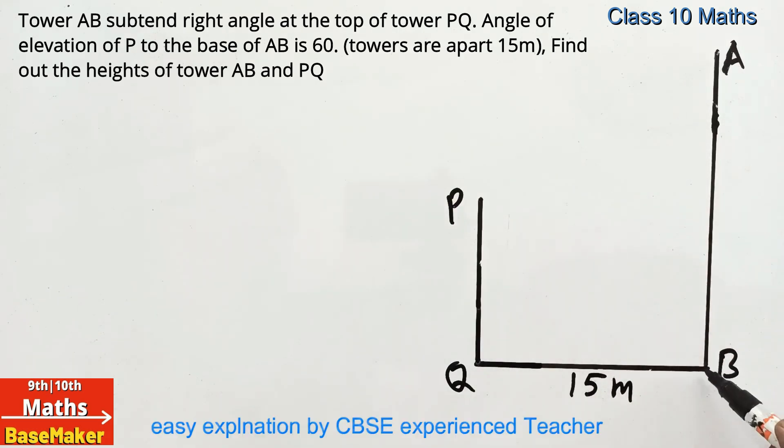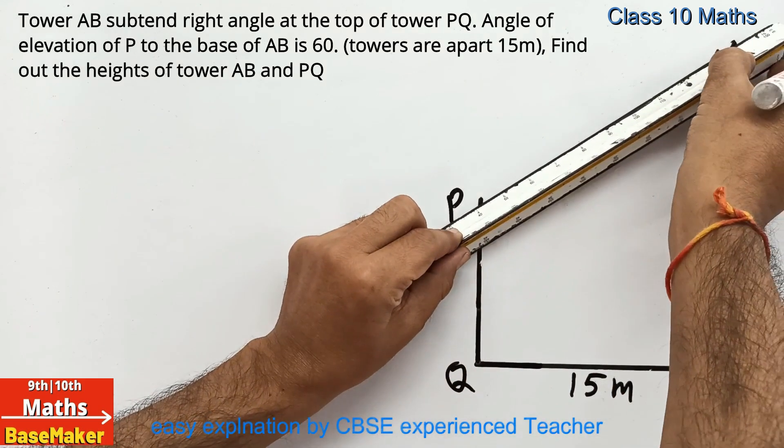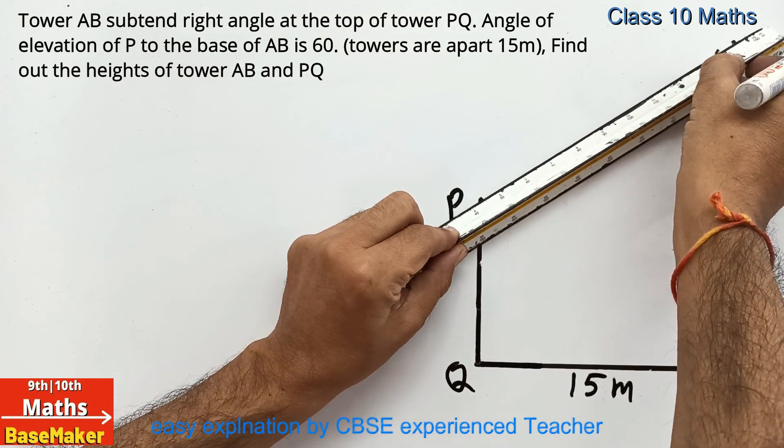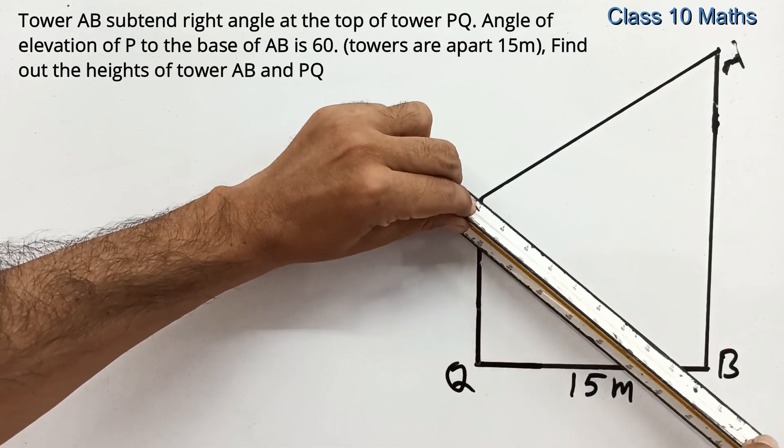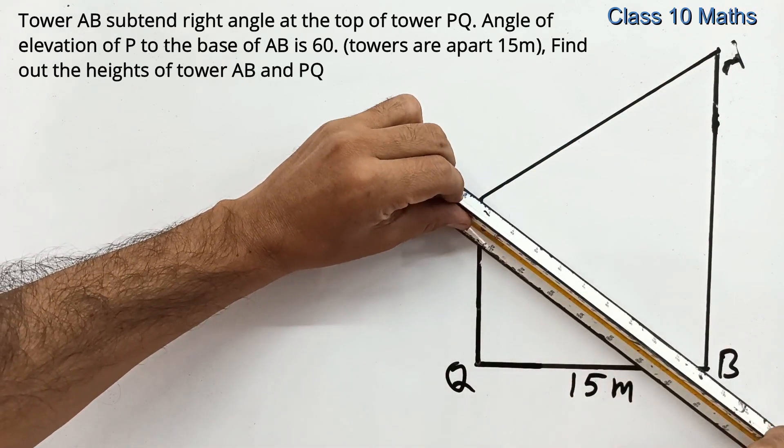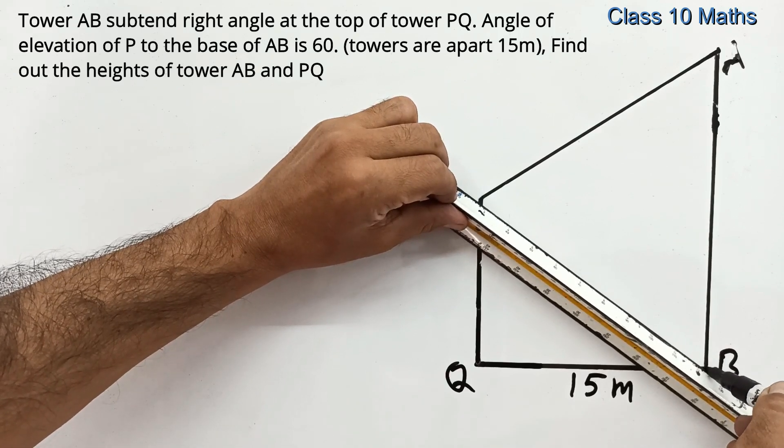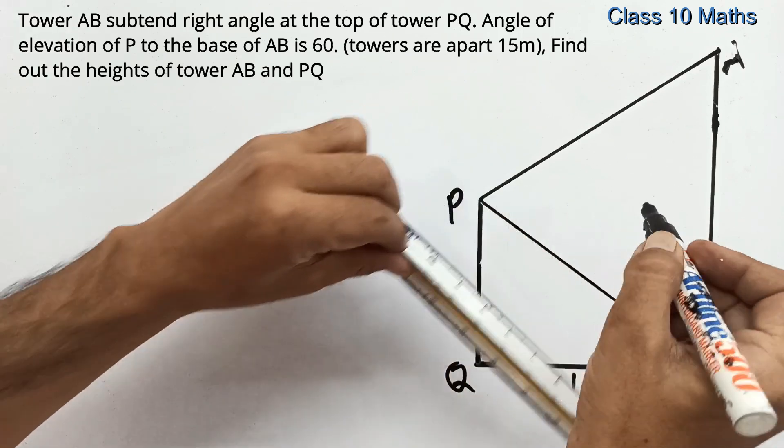So my dear student, this is tower AB, this is tower PQ, 15 meters apart. According to the question, it is given that the tower AB subtends the right angle at the top of tower PQ. So this is a right angle.